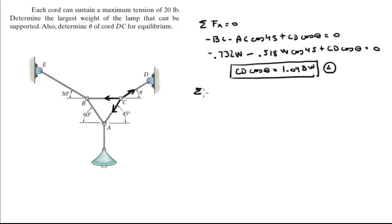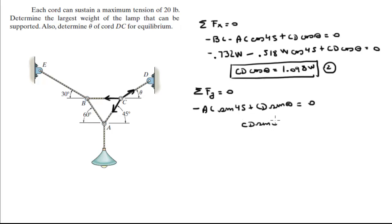We also know that the sum of the forces in the Y is equal to 0, so minus AC times the sine of 45 plus CD times the sine of theta equals 0. Solving for CD sine of theta: CD sine of theta equals AC times sine of 45. Plugging in 0.518 W for AC, we get CD sine of theta equals 0.366 W. Let's call this equation 3.